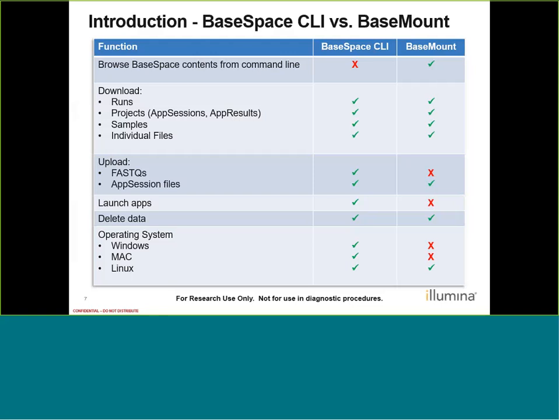With both CLI and BaseMount, we can download BaseSpace entities. This includes downloading full runs and projects, downloading a part of a project like a specific app session, or downloading all files associated with a sample or just an individual file like a FASTQ file or a BAM file. CLI grants us the ability to bulk upload FASTQ files and app session files — these are files like manifest or targeted BED files required for particular apps like targeted resequencing. BaseMount does not allow uploading FASTQ files, but we are able to upload app session files. CLI allows us to launch apps while BaseMount does not. Additionally, we can delete data with both tools. And lastly, CLI can be used with most operating systems while BaseMount can only be used with Linux.